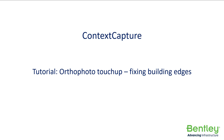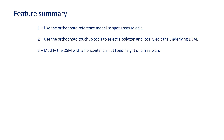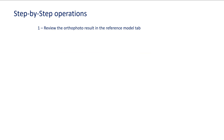We will see in this tutorial how this can be fixed. Here is the feature summary: first, we use the Autophoto reference model to spot areas to edit. Then we use the Autophoto touch-up tool to select a polygon and locally edit the underlying DSM. And finally, modify the DSM with a horizontal plane at fixed height or a free plane. So let's review the step-by-step operations now.